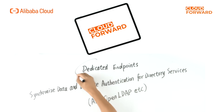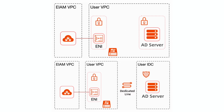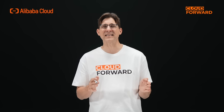In terms of enhancing identity security, IDES uses dedicated endpoints that can synchronize data and delegate authentication for directory services such as AD and OpenLDAP, without deployment or opening public network endpoints, thus enhancing the security of identity connections. Dedicated endpoints use ENI within the customer's VPC environment for network connections, and customers can implement flexible control through security group policies. If the directory service is within Alibaba Cloud, a private network connection to AD can be achieved through Alibaba Cloud's network capabilities. If the directory service is in a local IDC or another cloud, IDES can use a dedicated line to connect to the local AD private network.